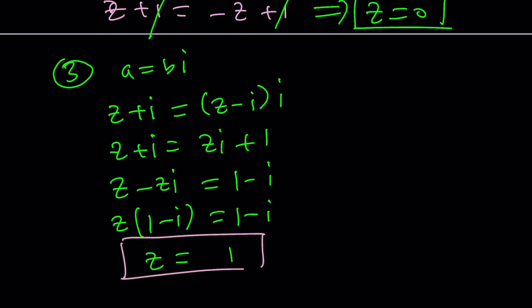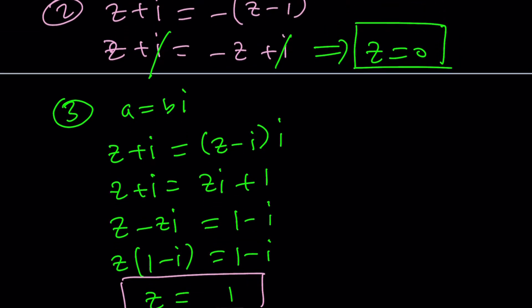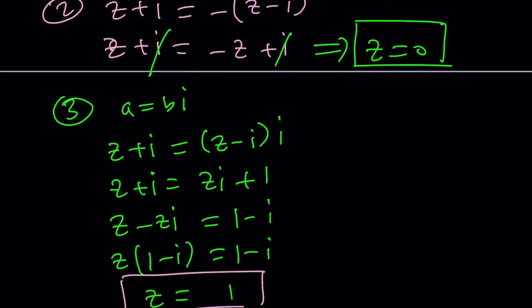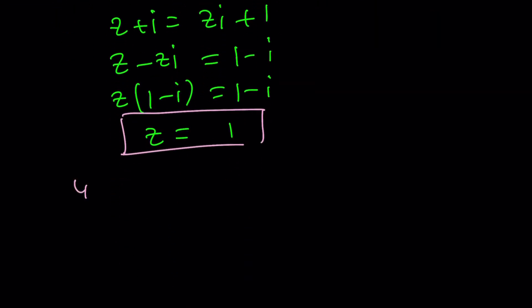How do you solve this? Subtract ZI, subtract I, factor out Z, one minus I, one minus I. Do you see what I see? Z equals one. One minus I times what equals one minus I? Itself, right? So Z equals one is another solution. So far, we haven't found anything complex, did we?